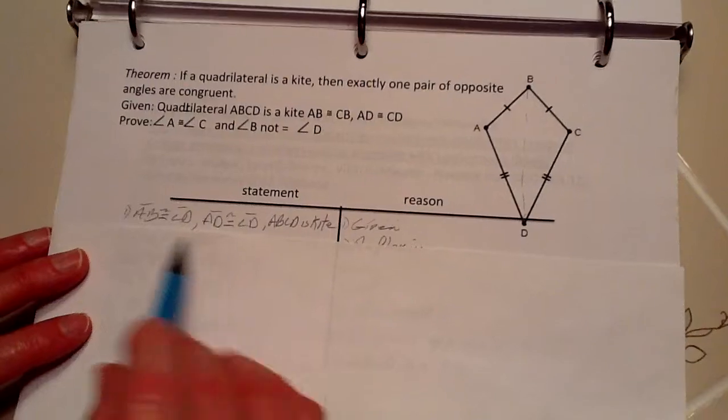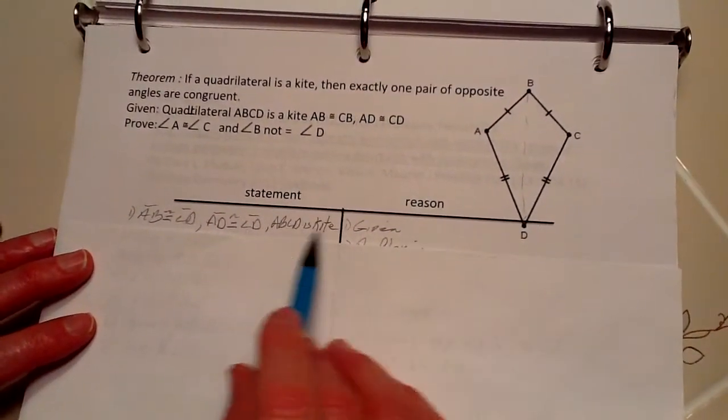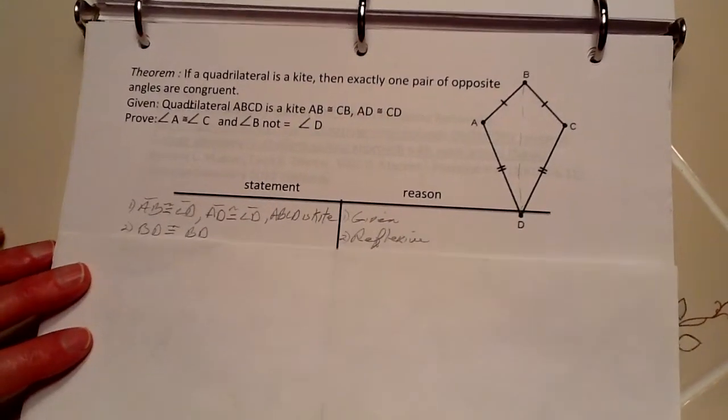So, we restate the given. These segments here are congruent to each other because it's a kite, and we also,